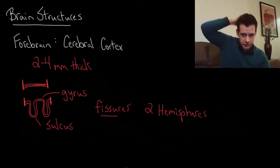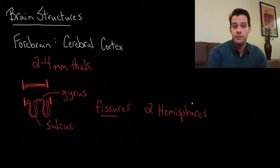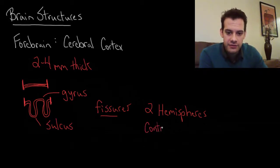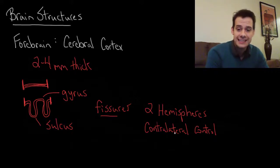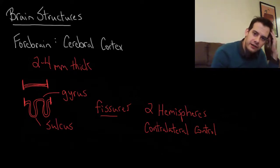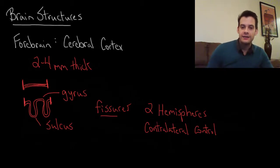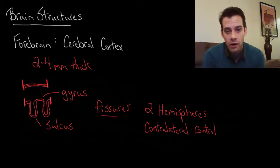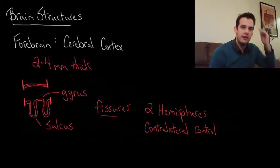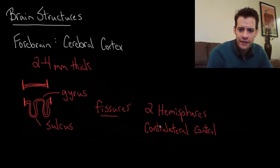This longitudinal fissure separates the left hemisphere from the right hemisphere, and an interesting thing about the hemispheres is that we have what's called contralateral control. Contralateral means against side or opposite side, and this just means that the hemispheres control the opposite sides of the body. So the left hemisphere controls the right side of the body, and the right hemisphere controls the left side of the body. So when something is touching your right arm, that information is actually being processed in your left hemisphere.